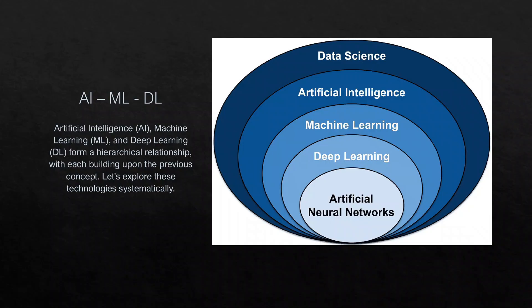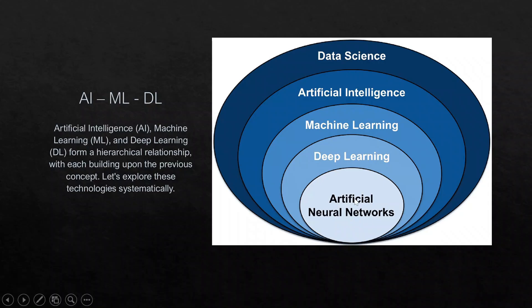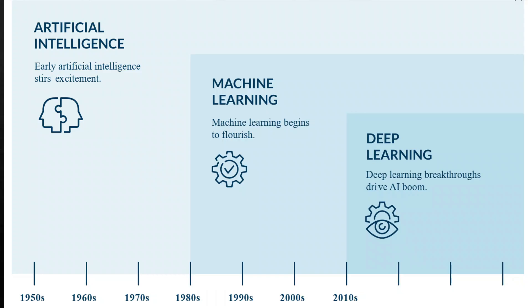Think of artificial intelligence as an umbrella — it's a fancy term for making computers smart enough to do tasks we usually do manually. AI is the largest circle, part of computer science focused on data science. Machine learning is a subset of AI, and under machine learning we have deep learning and artificial neural networks. We'll take a deeper dive into those in the second module; for now, think about AI and ML as broad topics and how AI evolved over the past five to six decades.